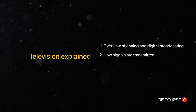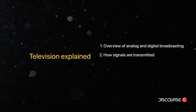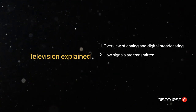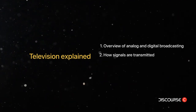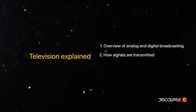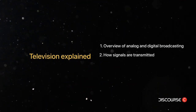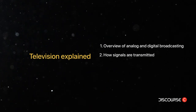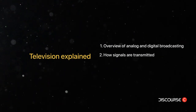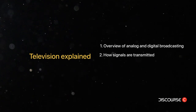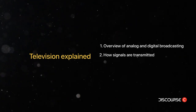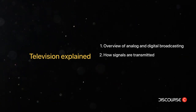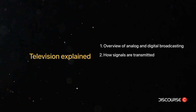Television signals are transmitted from the source to your TV using a variety of methods. In the case of traditional broadcast television, the source of the signal is a television station, which sends the signal over the airwaves using an antenna. The signal is picked up by an antenna on the roof of a home or building and is then sent to the television set through a coaxial cable.